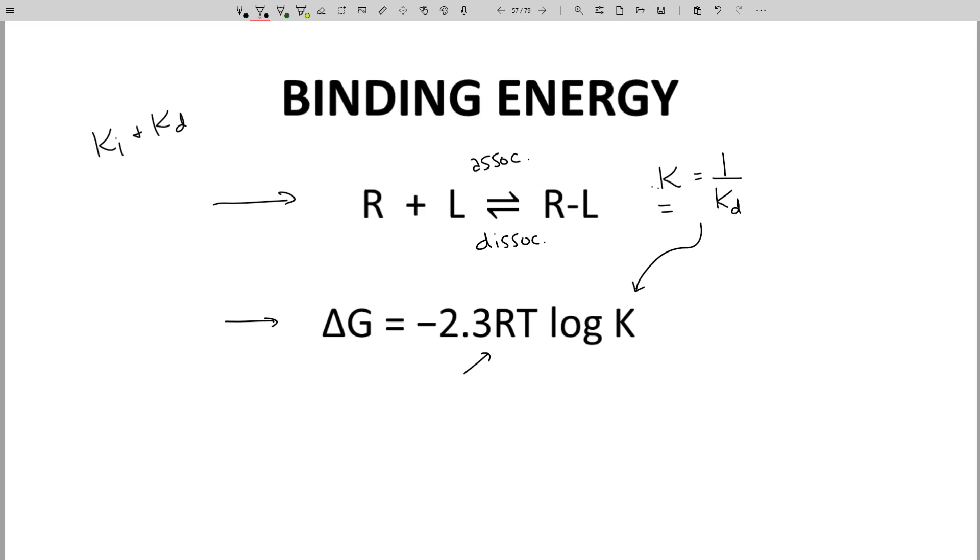R is 0.00199, and the units on that are kcals per mole degree Kelvin. T will be 298 K degrees Kelvin. What should we use for KD? Let's use 10 to the minus eighth molar. If we work through the math, the binding energy for a typical drug is minus 10.9 kcals per mole. And we can round that to minus 11 kcals per mole.